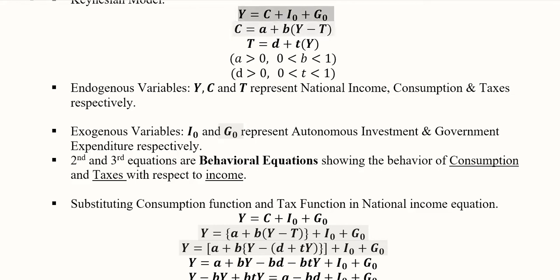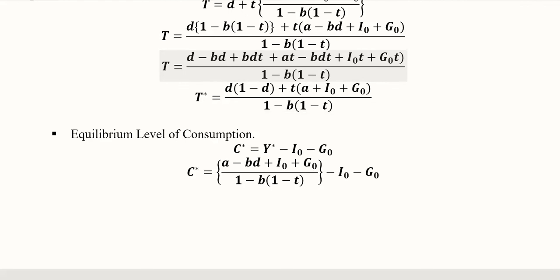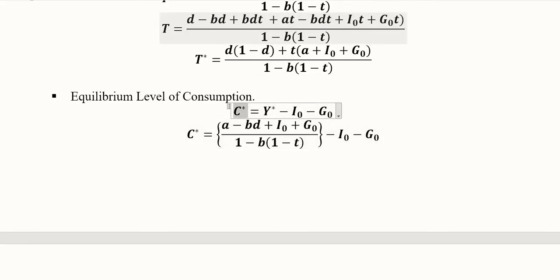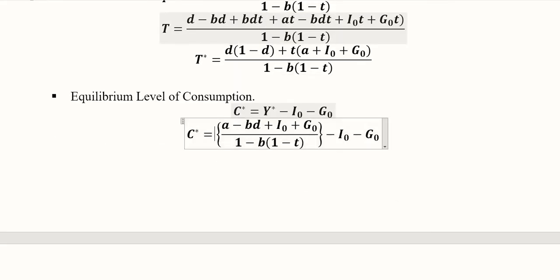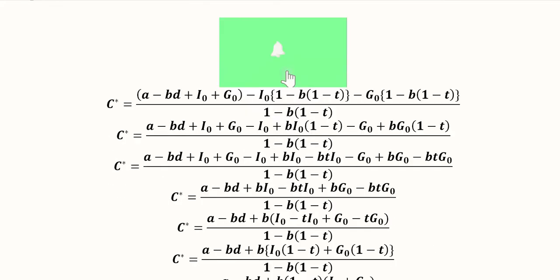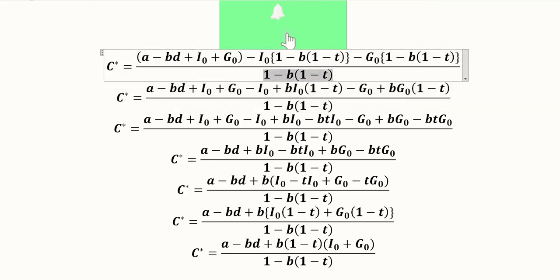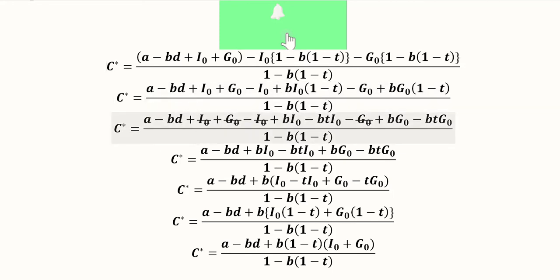Rearranging the first definitional equation, we bring C* to the other side: C* equals Y* minus I-naught minus G-naught. We substitute the value of Y* that was already used in the tax equation. Taking the LCM and simplifying, several terms are expected to cancel and we proceed with cancelling them out.